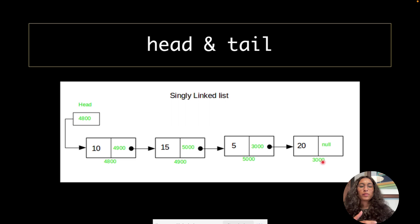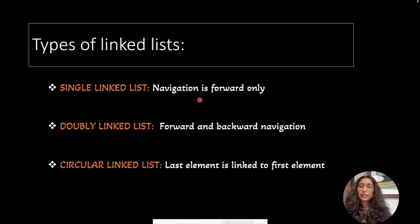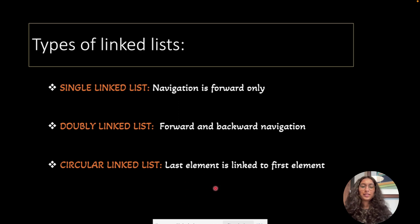Before looking at a real world example, let's see what types of linked lists we have. First is the singly linked list, where navigation is forward only. Second is the doubly linked list, where both forward and backward navigation is possible. Third is the circular linked list, where the last element is linked to the first element so we can use it in a circular manner.